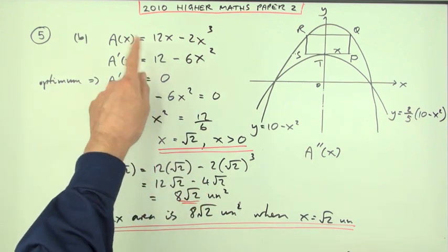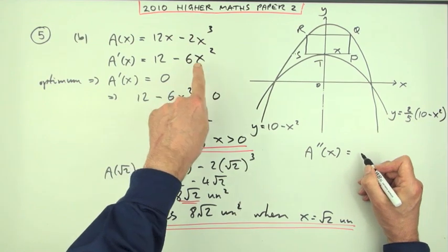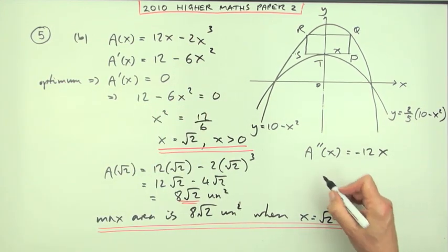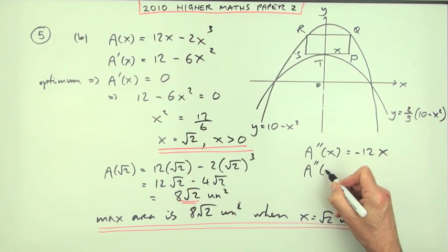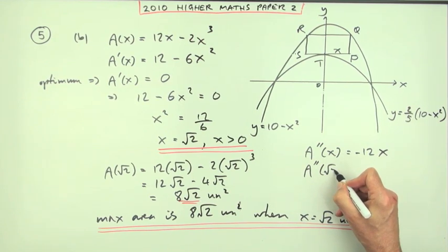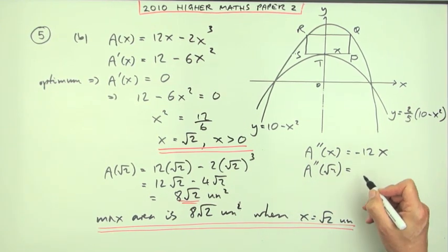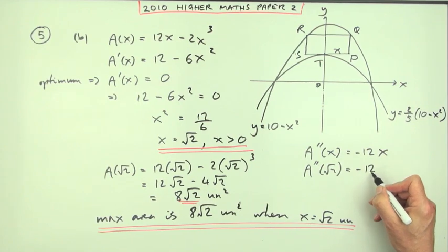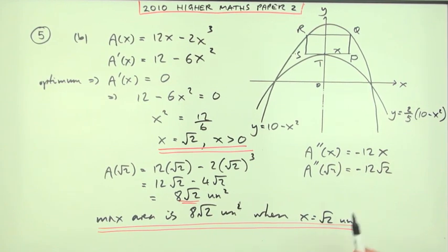Which means at x equals root 2, the gradients are changing at a rate of negative 12 root 2. Now, negative, a negative rate of change means they're slowing down. They're heading up, so then they'll be heading down eventually.